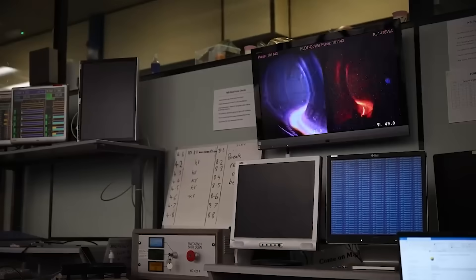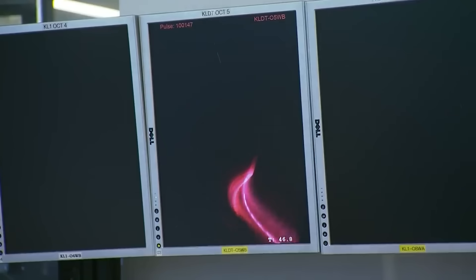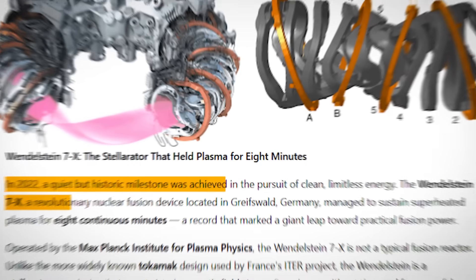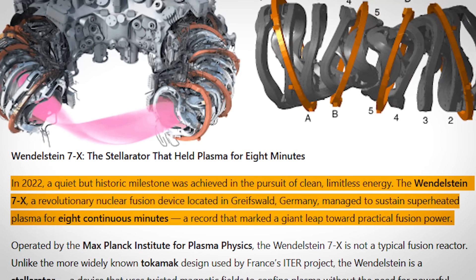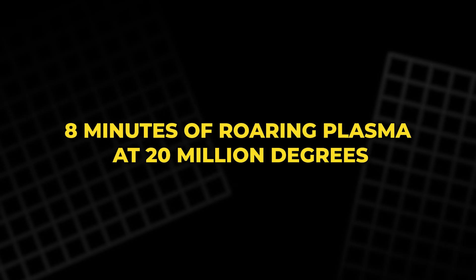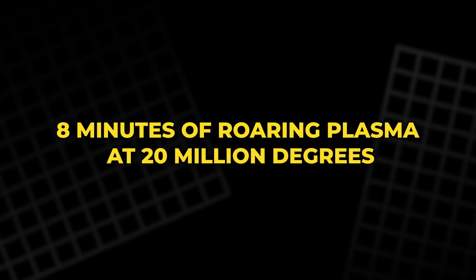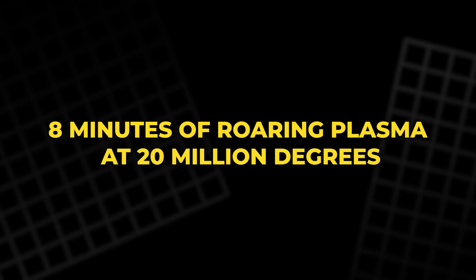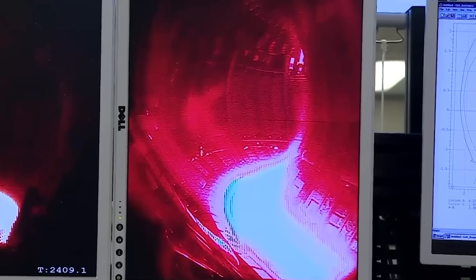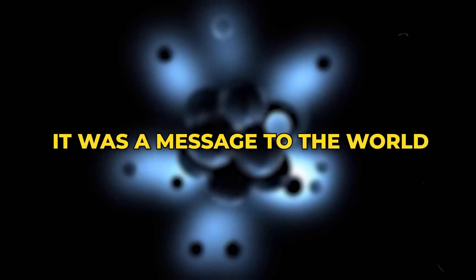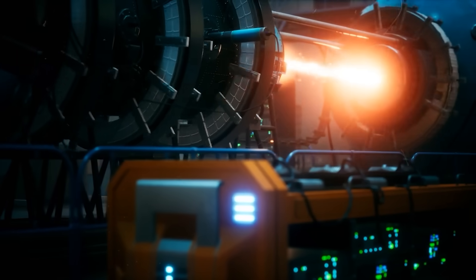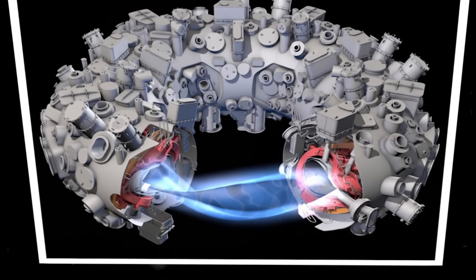Most fusion experiments celebrate if they can keep plasma alive for a few seconds. But late in 2022, the Wendelstein 7X held it for eight minutes. Eight minutes of roaring plasma at 20 million degrees. Eight minutes of stability. No meltdown. No flicker. No collapse. The plasma remained confined, dense, and hot. It was a message to the world. Fusion no longer had to be a fleeting spark. It could be sustained.